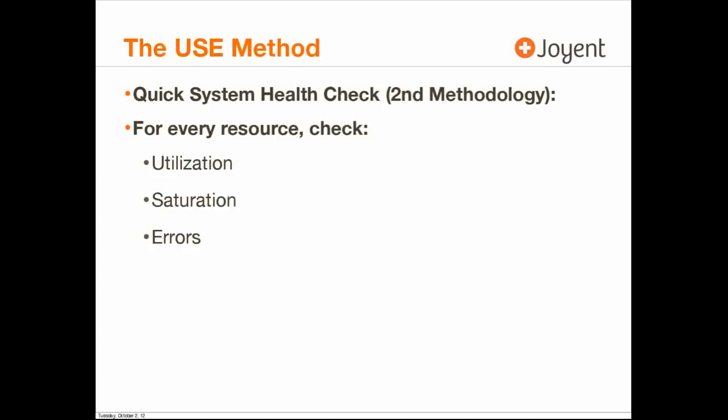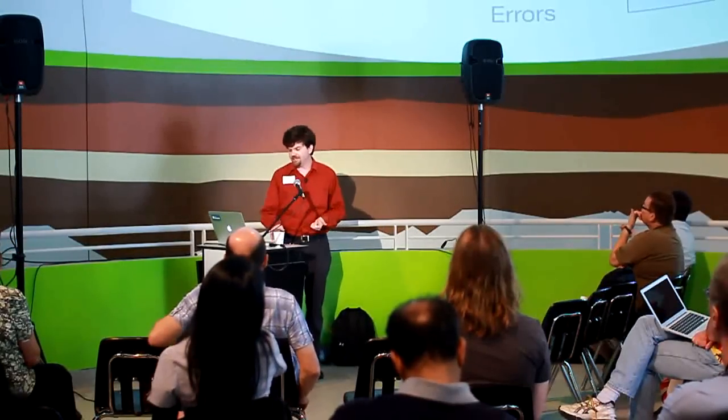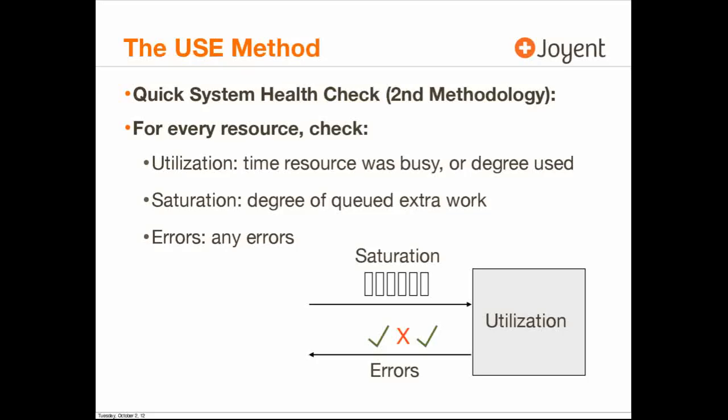Then the USE method comes second. The USE method is the quick check of system health — it can be summarized very simply: for every resource, check for utilization, saturation, and errors. Utilization is the time a resource was busy, or the degree a resource was used. Saturation means the degree of queued extra work. And errors means any errors encountered. If you've done queuing theory before, this might look familiar. For the operating system, the hardware resources would include the CPUs, main memory, network interfaces, storage devices, controllers, and interconnects.